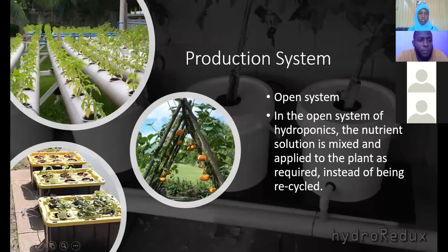In the hydroponic system, there are two forms of production systems: the open system and the closed system. The open system is where the nutrient solution is mixed and applied to the plant as required. This might save money as it relates to being cost effective, but many persons are opting to use the closed system or closed production system as it relates to hydroponics.